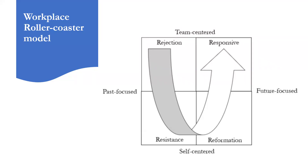We all predictably go through these four stages. What is difficult is that people go through them at different times. Your team at work will not go through rejection, resistance, reformation, and responsiveness all at the same time — they will vary in terms of when they go through each stage. You too will vary in terms of when you go through these stages.